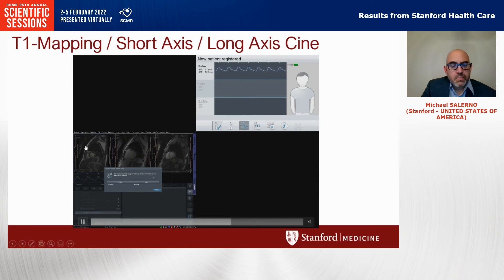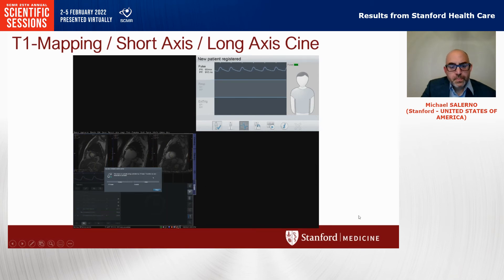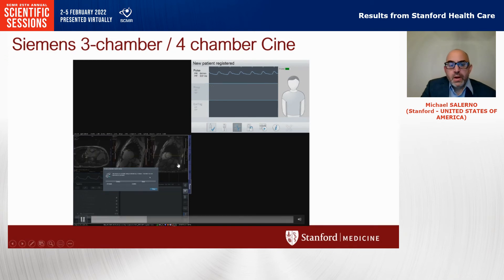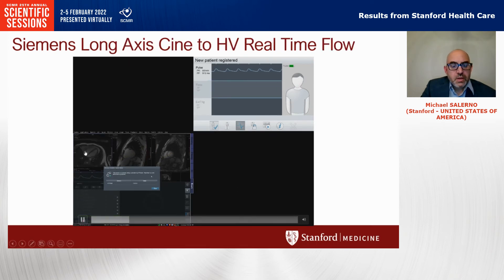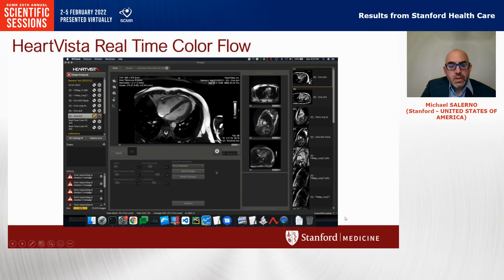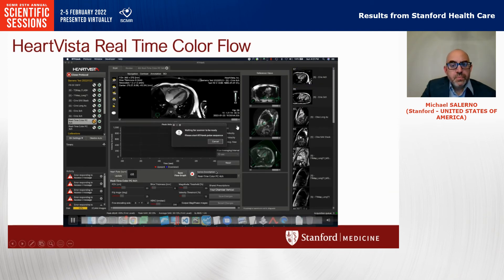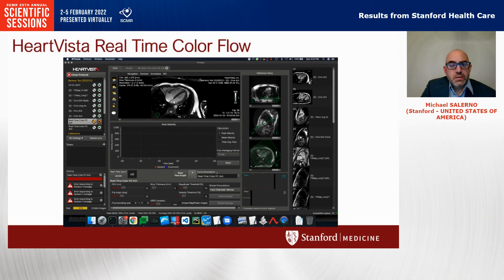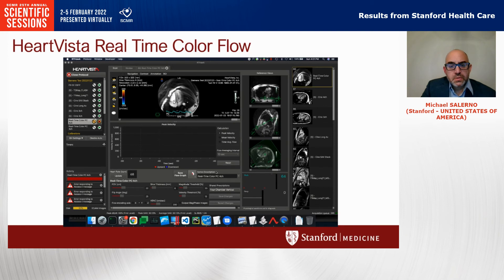Now it's automatically planning the three-chamber view. After acquiring the three-chamber, it sets up the four-chamber, and then we have the four-chamber view. Now we're turning the scanner back over to a HeartVista sequence — the last CINE in four-chamber has come up, and it's now going to run the HeartVista real-time color flow sequence. That gives you a basic demonstration of how we're running the scanner using Siemens sequences from the HeartVista framework.